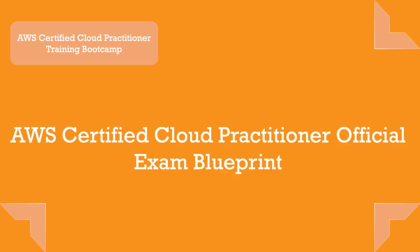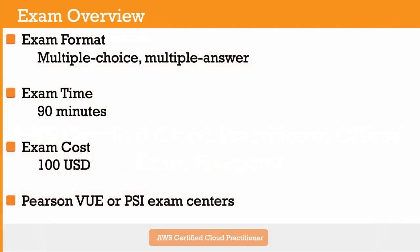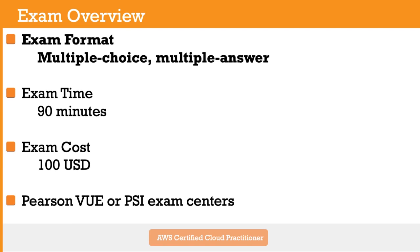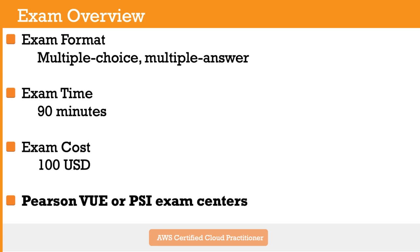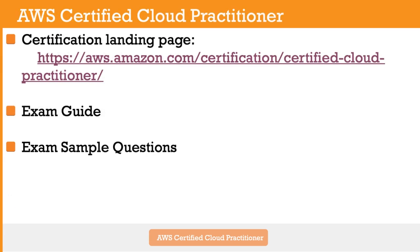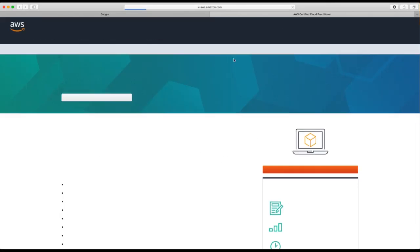In this section, we will cover the AWS Certified Cloud Practitioner Official Exam Blueprint. The exam format includes multiple choice and multiple answer questions. The exam time is 90 minutes and the cost is $100 USD. You can schedule the exam at Pearson VUE or PSI exam centers around the world. Expect around 65 questions. The AWS Certified Cloud Practitioner landing page is at aws.amazon.com/certification/certified-cloud-practitioner.